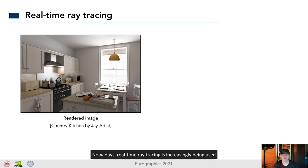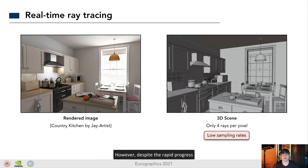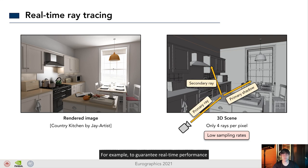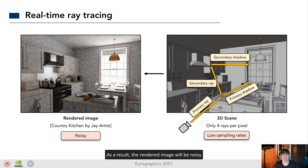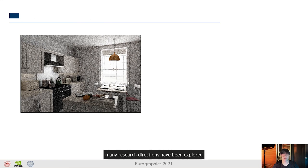Nowadays, real-time ray tracing is increasingly being used in a variety of industries. However, despite the rapid progress, it still only allows for low sampling rates. For example, to guarantee real-time performance, for each pixel only four rays can be traced. As a result, the rendered image will be noisy. To improve the essential sampling rate, many research directions have been explored.